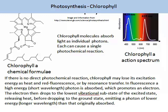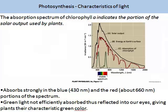In fluorescence, a high energy or short wavelength photon is absorbed, which promotes an electron. The electron then drops to the lowest vibrational substate of the excited state. Once the electron has fallen, it releases heat and then drops to its ground state, emitting a photon of lower energy or longer wavelength than was originally absorbed. Put simply, this means that chlorophyll A absorbs solar radiation in only small regions of the light spectrum.